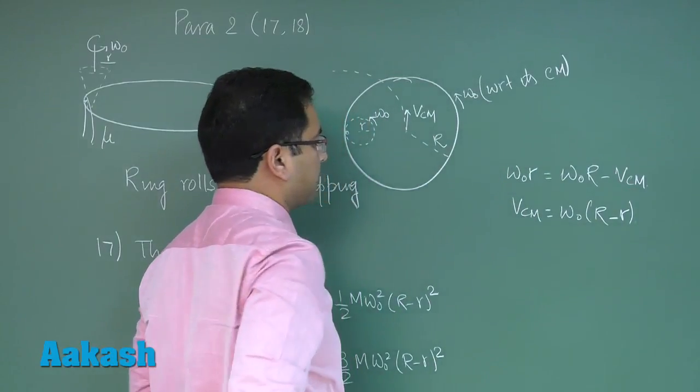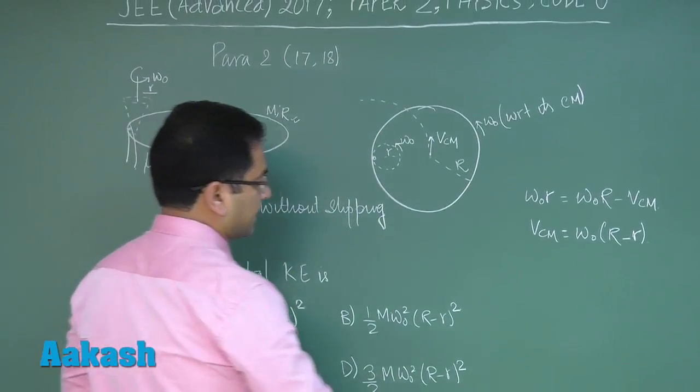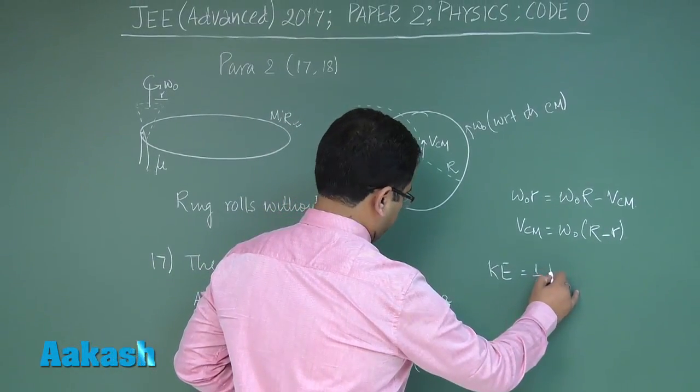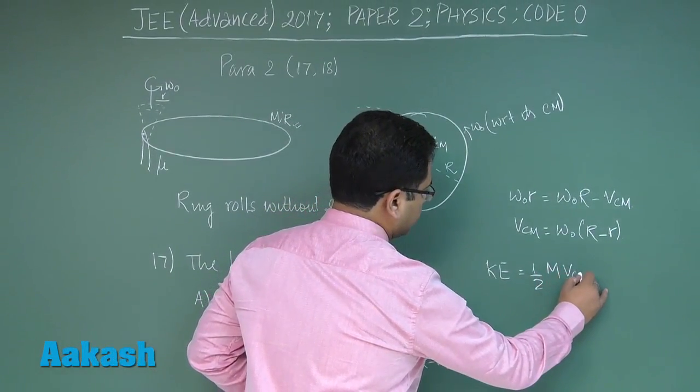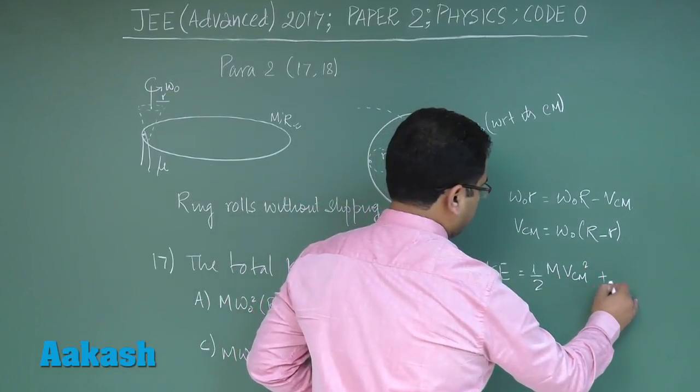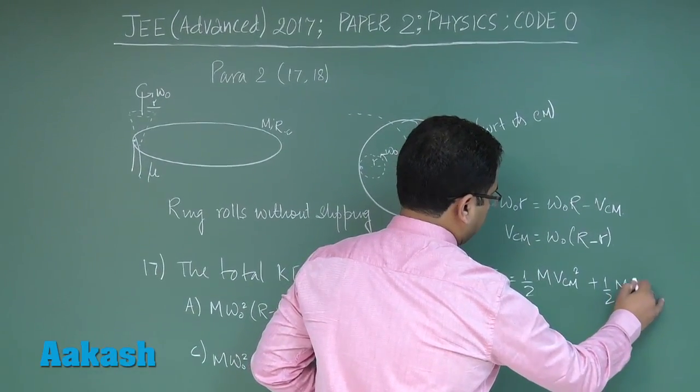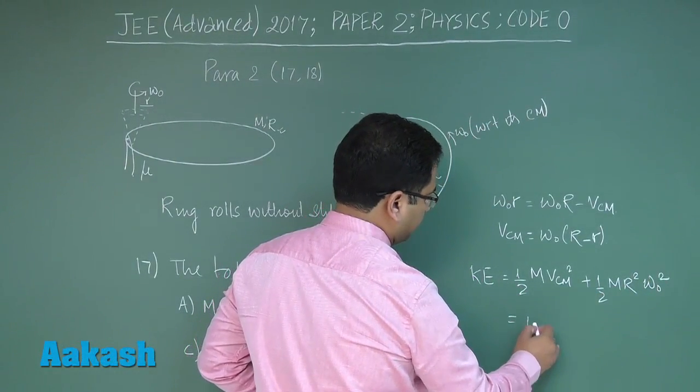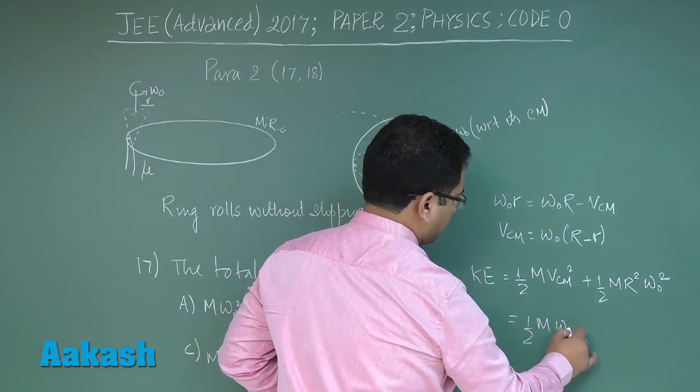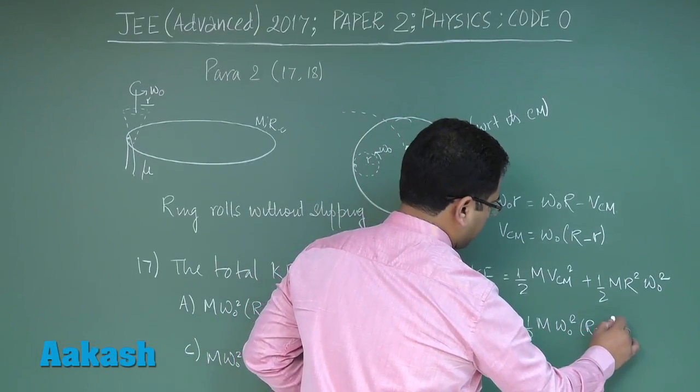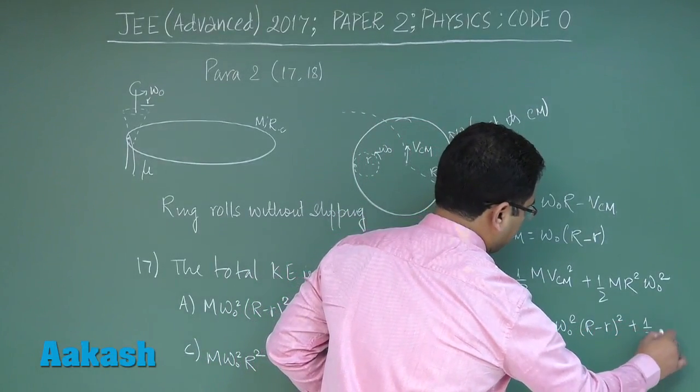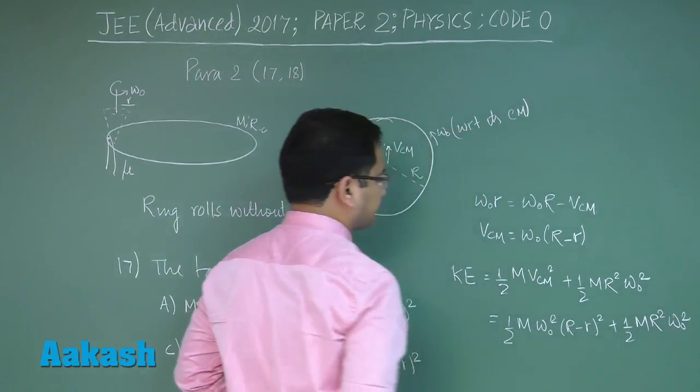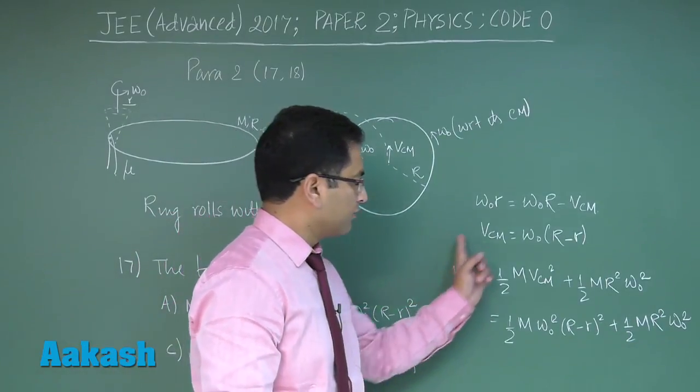All right, now let's find the kinetic energy. The kinetic energy of the ring would be half M VCM squared plus half MR squared omega naught squared, and this comes out to be half M omega naught squared (R minus small r) whole squared plus half MR squared omega naught squared. This is the conclusion that we have reached on the basis of the given data.